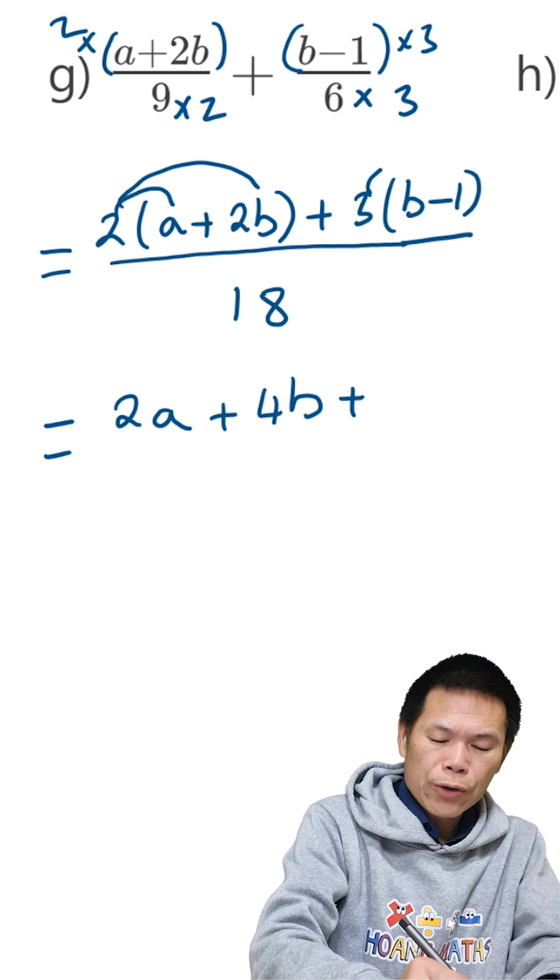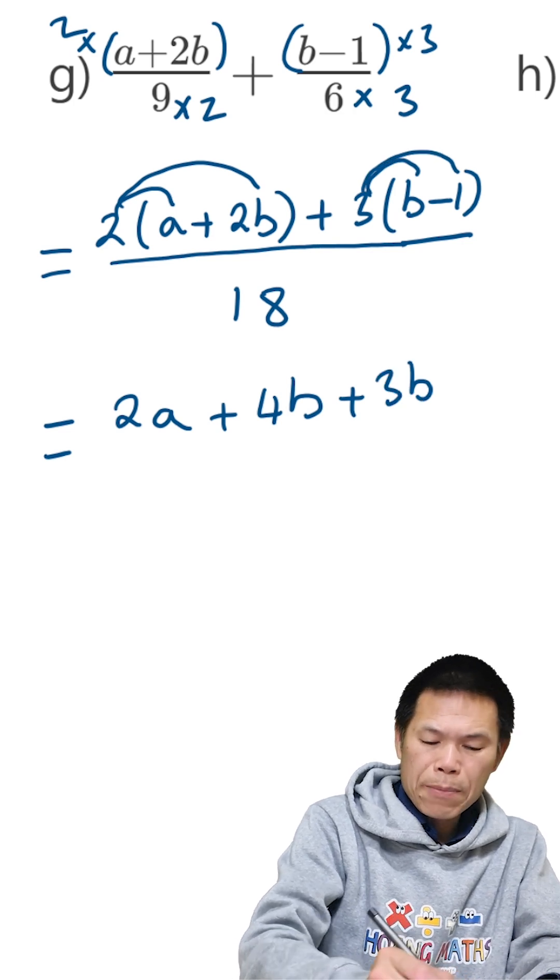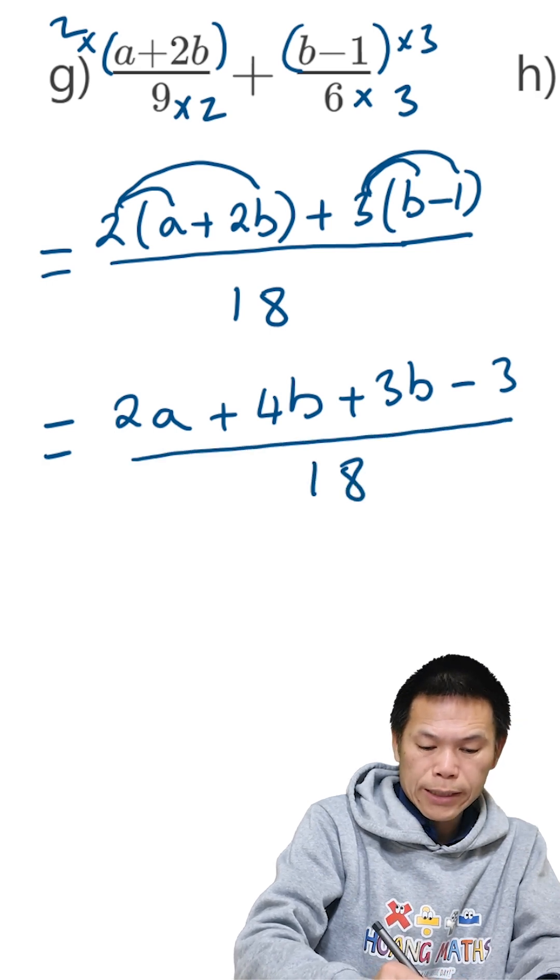We add 3 times b, 3b. 3 times negative 1, minus 3, over 18.